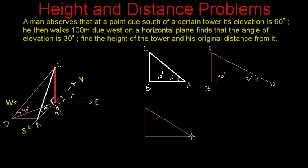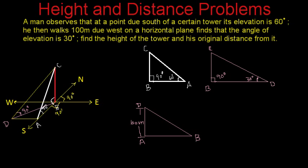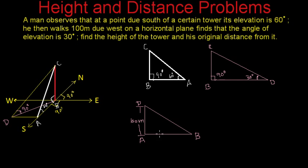We have got another right angle triangle with point C at the top, point B at the base, and point D as the observer's new position, where angle D is 30 degrees and angle B is 90 degrees. There is also a triangle in the base plane: triangle ABD, where A is the original standing point, D is where he reached after walking 100 meters, AD equals 100 meters, and B is the base of the tower. We have to find the height of the tower CB and the original distance AB.